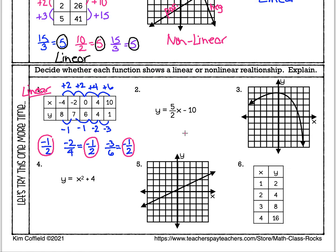For the equation in number two, remember all you're doing is looking at the exponent on the X. Here's my X — I ask myself, is that a plain X? It certainly is. If it had an explicit exponent it would just be 1. So this one is linear.